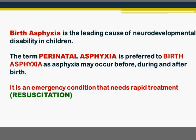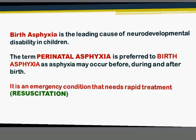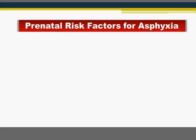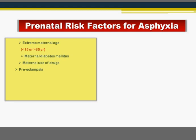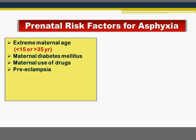What are the prenatal risk factors for asphyxia? Can we anticipate or predict birth asphyxia in some deliveries? Yes. There are prenatal risk factors related to the mother herself: extreme maternal age (less than 15 or more than 35), maternal diabetes mellitus, maternal use of drugs, and preeclampsia.